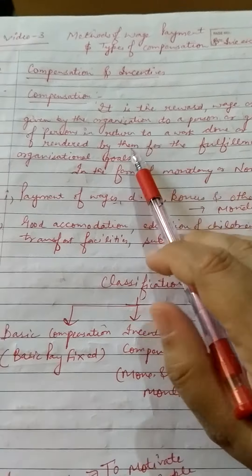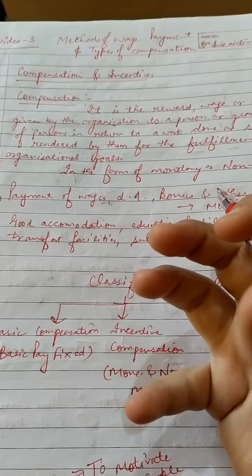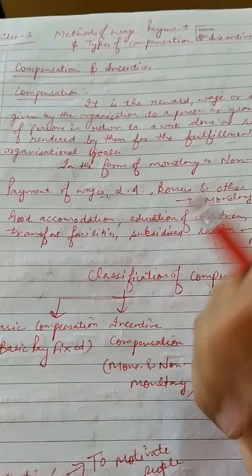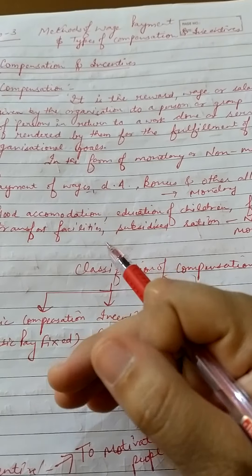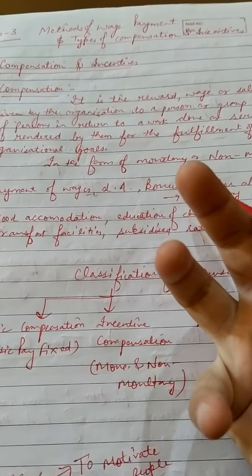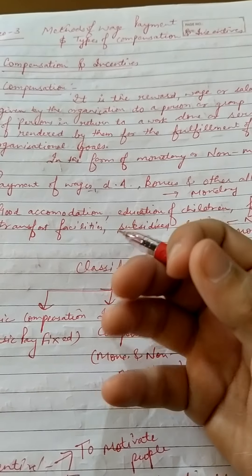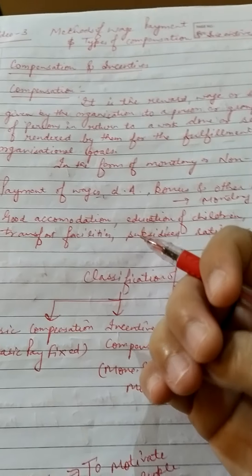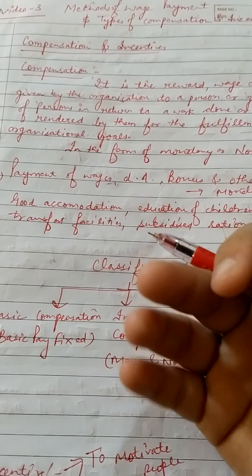So first of all, what is compensation? Compensation is the reward, wage, or salary which is given by the organization to a person or group of persons in return for work done or services rendered by them, for the fulfillment of the organization's goals.